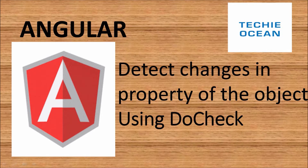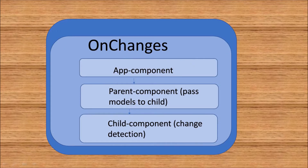Welcome to TechieOcean. In this tutorial we'll see how to detect changes in the property of an object using DoCheck. In the previous tutorial we implemented OnChanges, passing two models from the parent component to the child component — one was a simple model and the second was an object of a class type. The problem was that whenever the object property changed in the parent, the child component was unable to detect that change using change detection.